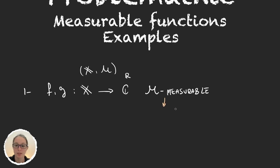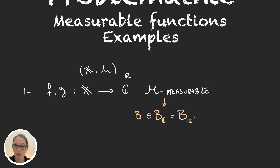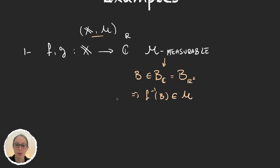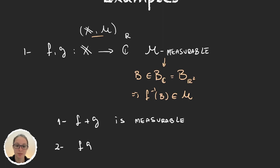Remember that measurability meant that whenever we took some set B in the Borel sigma algebra on the complex numbers — which is actually equal to the Borel sigma algebra of R² — then the preimage through f and through g, because they are both measurable, is an element in the sigma algebra M on X. So we have two measurable functions, and we can prove that f plus g is measurable and f times g is measurable.